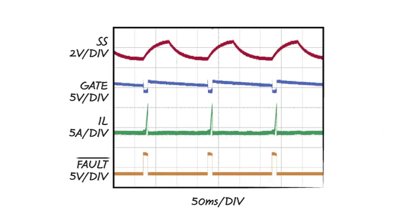The scope shot on the right shows what happens when the short is continuously present. The part starts up, but each time detects the short and enters the fault mode. After a period of time has expired, the part restarts, but again detects the fault.